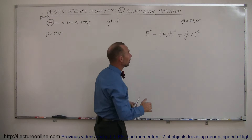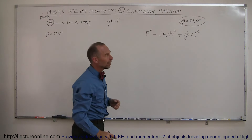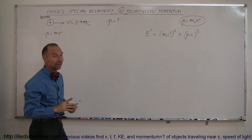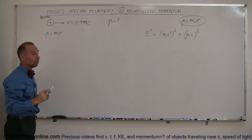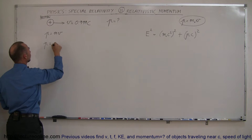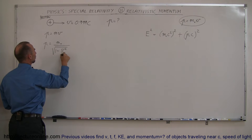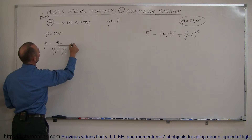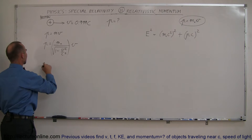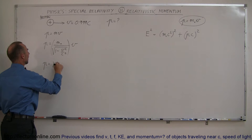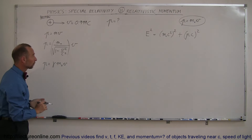Remember that in non-relativistic situations, momentum is always equal to the mass times velocity. But in relativistic situations, we have to be careful. The mass is no longer the rest mass; the mass is now the relativistic mass. So, p is equal to m-sub-naught divided by the square root of 1 minus v-squared over c-squared, times velocity. We can simplify that by writing p equals gamma times m-sub-naught times v, where gamma is 1 over the square root of 1 minus v-squared over c-squared.